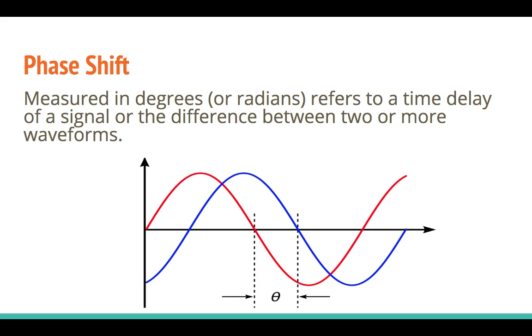Phase shift is measured in degrees, can also be measured in a unit called radians. If you recall from your geometry, we can measure angles around a circle in a unit called radians.